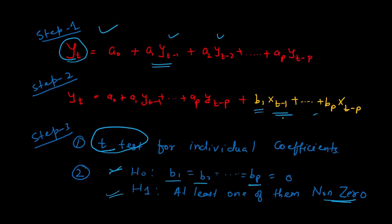Knowing Granger causality helps us build better time series models. We are all familiar with AR, MA, or ARMA modeling using only univariate data. By including multivariate data — other variables — we can improve prediction and forecasting. If a particular variable Granger causes a given time series, we can use it for better predictions, but first we need to confirm this through a statistical test.